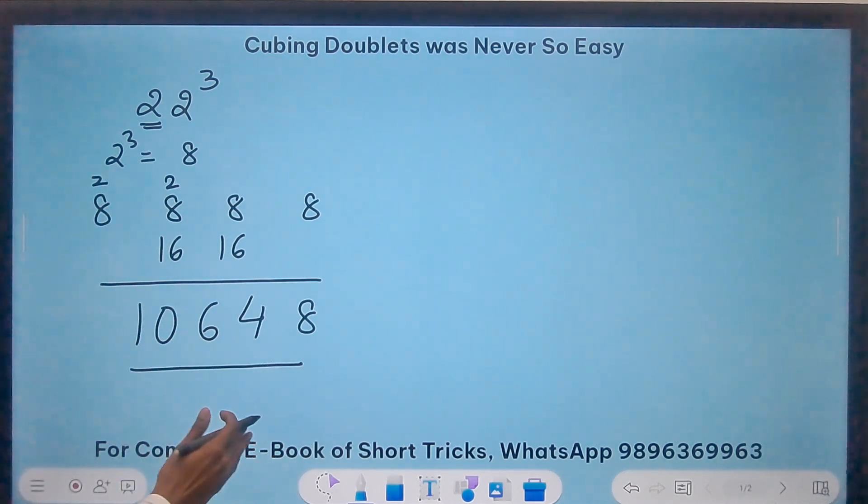And now pick up the calculator and check. 22 cube. Is it 10648? You will be surprised by the result.